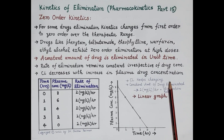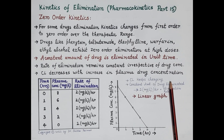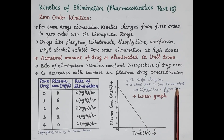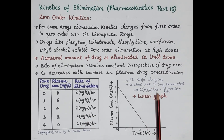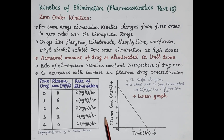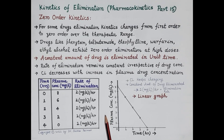Clearance keeps changing — it decreases with increase in plasma concentration — and therefore these drugs can cause toxicity. In summary, for zero order kinetics: a constant amount of drug is eliminated (in this example, 2 mg/L per hour), elimination rate remains constant at 2 mg/L/hr. This has been a brief overview of kinetics of elimination of drugs — drugs eliminated by first order kinetics and zero order kinetics. Please note that the information provided in this video is meant exclusively for students from an examination point of view.